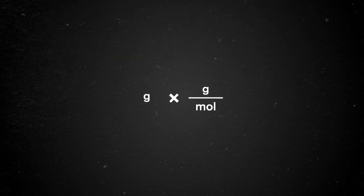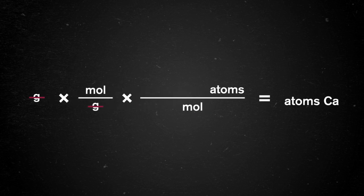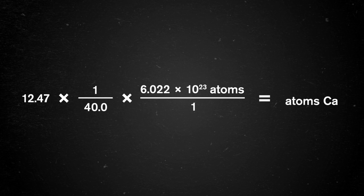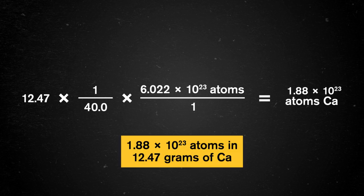As we write out our expression, we'll focus on the units only to start. We want our given units, grams, to cancel, and we can make that happen with the conversion factor that's in grams per mole. In order to cancel, grams should be on the bottom of our conversion factor, so we need to write it in terms of moles over grams. For the second conversion, if we write the units as atoms over moles, our moles will cancel, leaving us with our answer in atoms. Now that we have our units written out, we can fill in our numbers: 12.47 for the grams of calcium, 1 over 40 for the molar mass, and 6.022 times 10 to the 23rd over 1 for Avogadro's number. Rounded to three sig figs, there are 1.88 times 10 to the 23rd atoms of calcium in 12.47 grams.